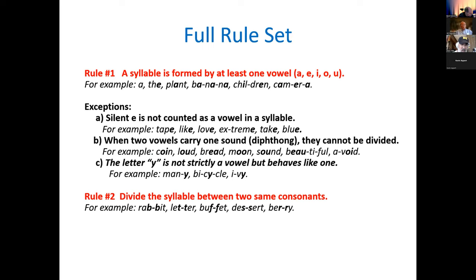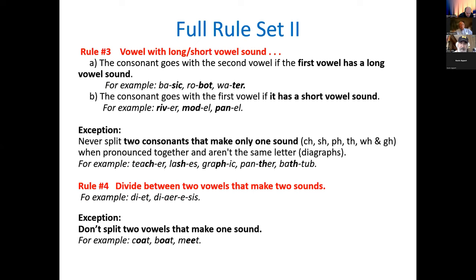Rule one: you need at least one vowel in a syllable — it's kind of a negative rule. Rule two: double consonants — you divide in between. That's very simple and doable, like 'rabbit' and 'letter.' Rule three: you need to know the sound of the vowels — long or short. Examples like 'basic' and 'robot' divide after the vowel, while 'river' and 'model' divide before a vowel, with some exceptions.